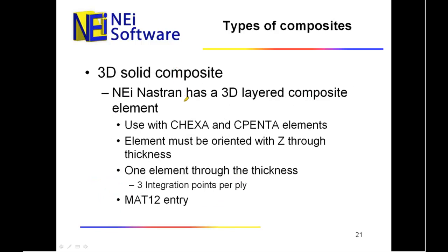3D solid composite. Nastran has a 3D layered composite element and you use it with HEXA and PENTA elements. The elements have to be oriented with Z through the thickness — this is an important point. Just recently, one of our tech guys wrote a little program that will orient your elements for you if you don't have Z through the thickness. If anyone needs that, give our tech support line a ring and we'll send you that program.